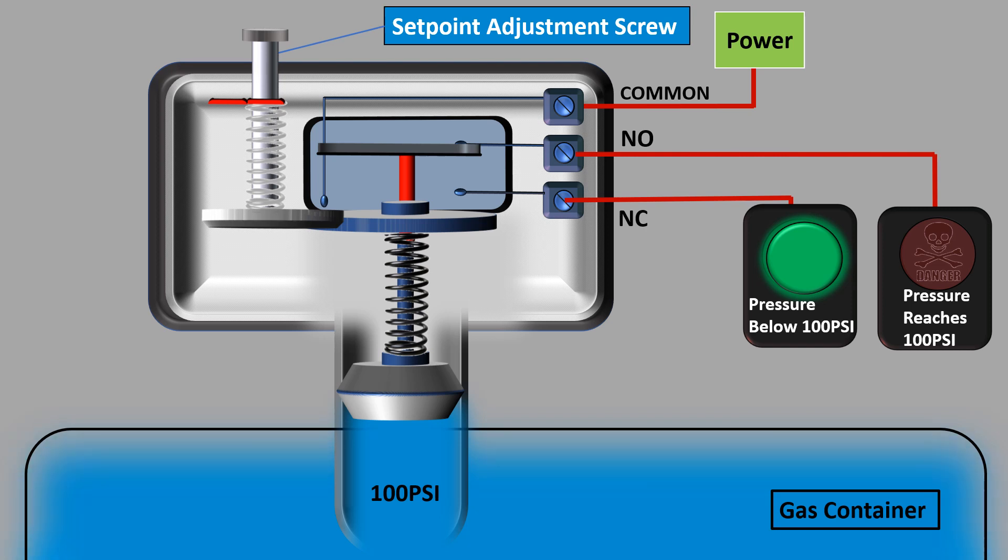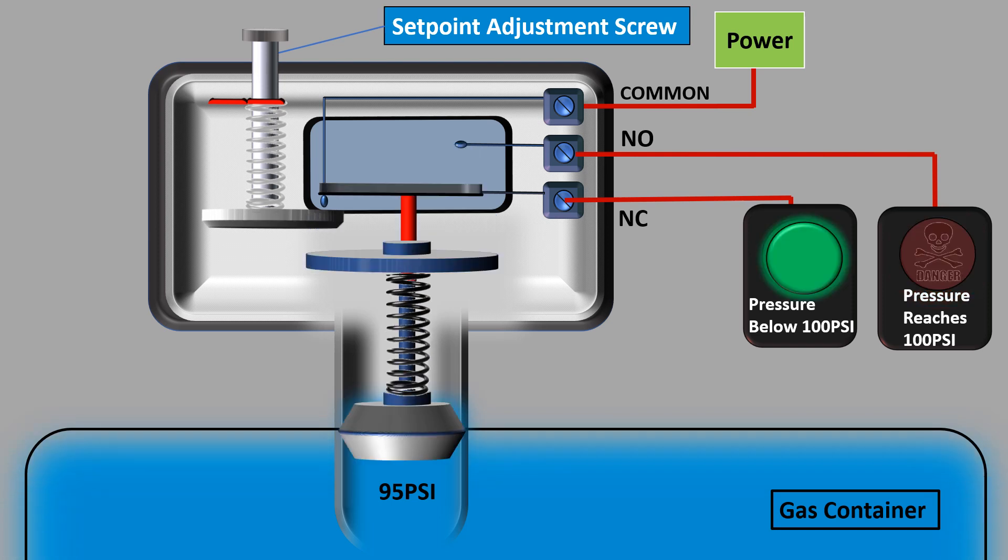Now the normally open contact will get power and the red light glows while the green light switches off. If this pressure switch has a differential of 5 psi, then reset pressure will be 95 psi, which means that when the pressure reduces to 95 psi, then the switch will come back to its normal state—that is, green light will be on and the red light will be switched off.